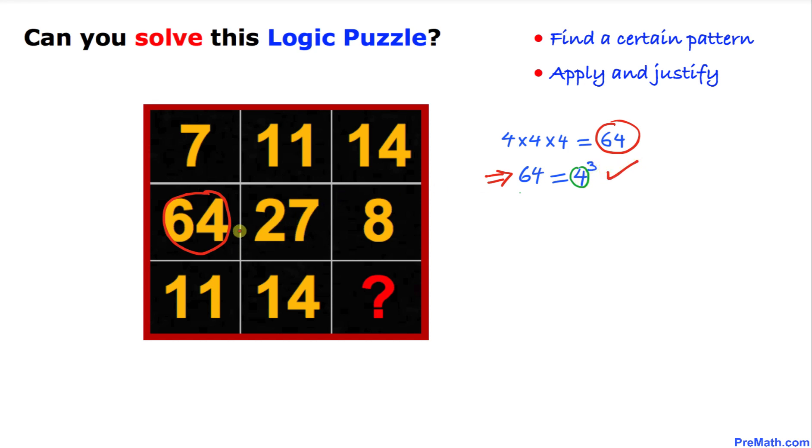...that is going to give us 4. And 7 plus 4 is going to give us 11. And now let's look at this next number which is 27.